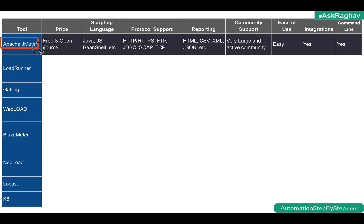Let's start with JMeter. JMeter is one of the most widely used performance testing tools and it is completely free and open source. It is created with Java and supports Java, JavaScript, BeanShell, and other languages via plugins. JMeter has a wide range of protocol support including HTTP, HTTPS — covering all web applications, APIs, and web services — as well as FTP, JDBC, and TCP.